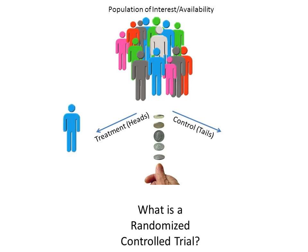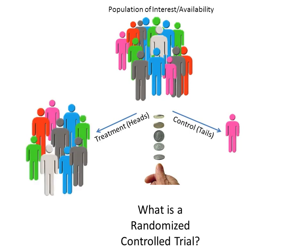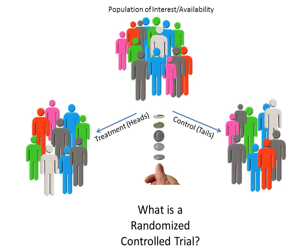We keep going like this, flipping a coin every time, until we have a sufficiently large treatment and control group. By sufficiently large, I mean large enough so that we are confident to within a small probability that these groups are statistically identical — statistical doppelgangers. They are similar in all respects, both in observed characteristics and in unobserved characteristics.